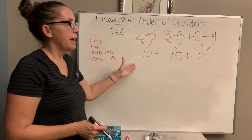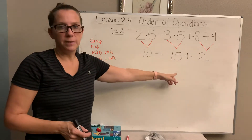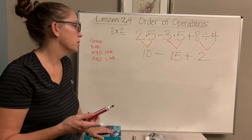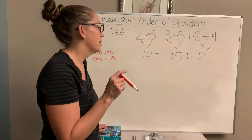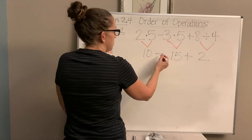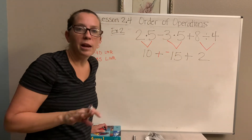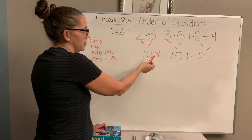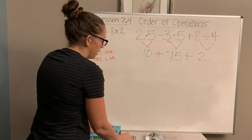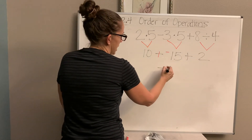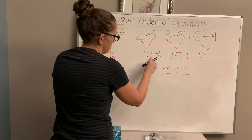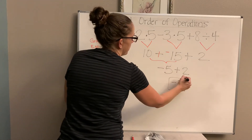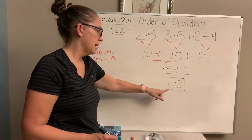Now I have to do this left to right: 10 minus 15. Can I take 15 away from 10? That gives me a negative number, so let's use integers. 10 minus 15 means 10 plus negative 15. You're not going to get away from integers — you'll be doing integers the rest of this year. If it's a minus, we change it to plus a negative. So 10 plus negative 15 gives me negative 5, then negative 5 plus 2 is negative 3. Remember, if your signs are different, you subtract and use the sign of the bigger number.